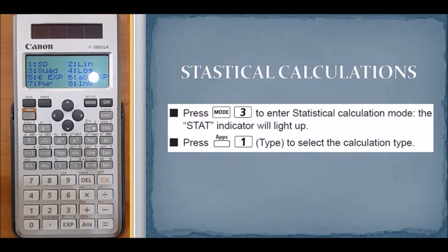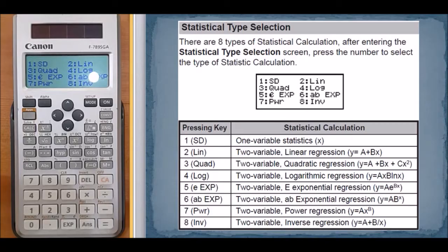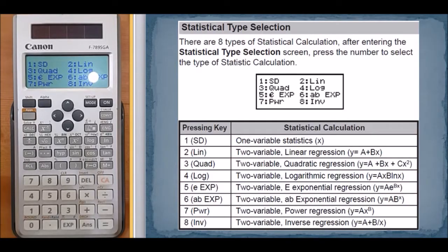Two LIN, two variable linear regression. Three QUAD, quadratic regression. Four logarithmic regression. Five exponential. Six exponential. Seven power regression. And eight inverse regression.